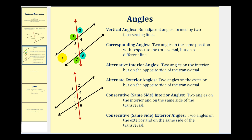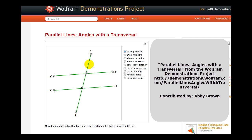Now if the two lines the transversal intersects are parallel, these angles have special relationships, which we'll talk more about in the next video. But let's go ahead and take a look at a Wolfram demonstration to once again review these definitions. In this diagram, EF would be the transversal because it intersects line AB and line CD.